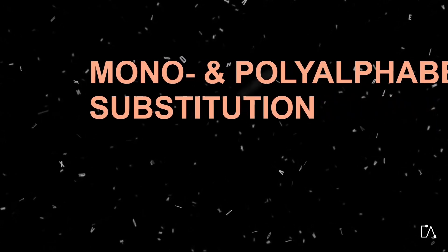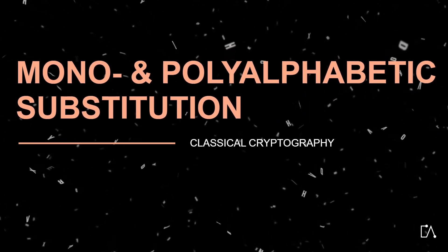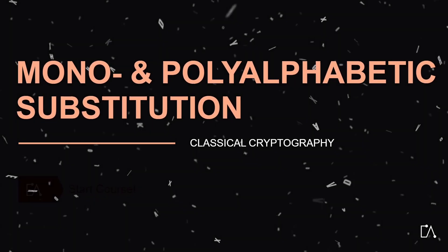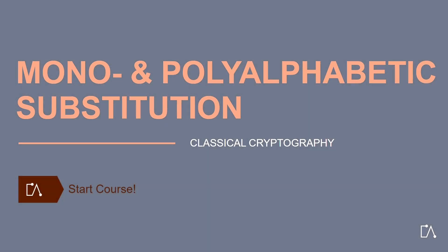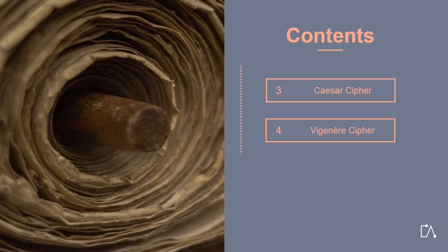Welcome to our course on Monoalphabetic and Polyalphabetic Substitution in the series on Classical Cryptography. Click on Start Course to begin now. In the second part of the e-learning course on Classical Cryptography, we focus on Monoalphabetic and Polyalphabetic Substitution. We will illustrate each of these methods with the help of two famous ciphers, namely the Caesar cipher and the Vigenère cipher.